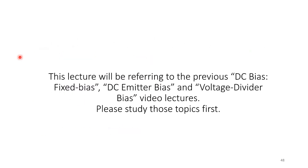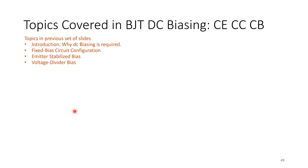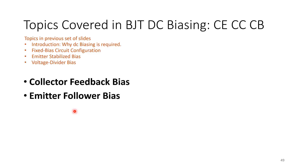This lecture will refer to previous videos, so please study those topics first. Each topic has a corresponding set of slides and tutorial that your course lecturer would have provided if you are a registered undergraduate. Under BJT DC biasing, we have covered all the previous configurations. Today there are three structures to cover: collector feedback, emitter follower, and common base.